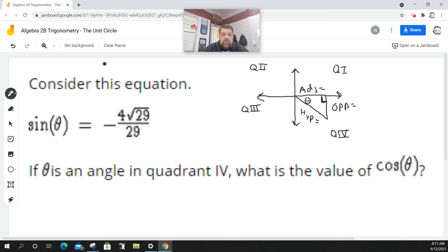So remember, for SOH CAH TOA, sine is the opposite over the hypotenuse.